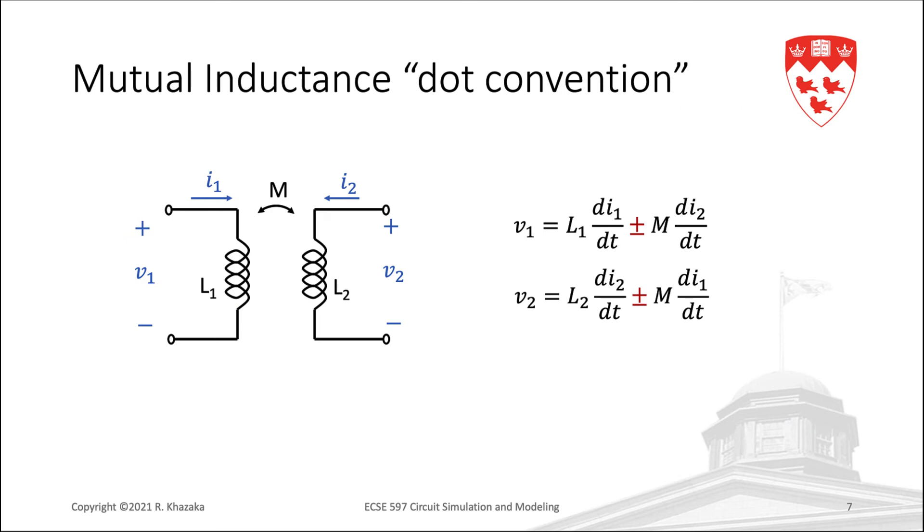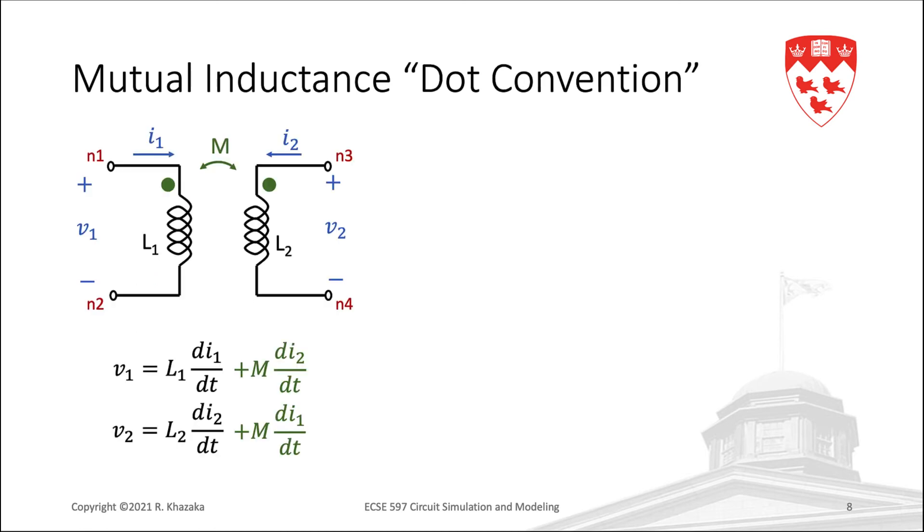At this point, I should probably say a few words about the dot convention. You may have seen the mutual inductance model presented with a plus or minus sign. The sign of M would depend on the relative orientation of the windings in the two inductors. The dot indicates this orientation so we know whether we have a positive or a negative mutual inductance.